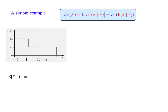Let us now look at the conditional expectation of X given Y. It is a random variable which can take different values depending on what Y is. If Y happens to take a value of 1, then we are in this range, and the conditional PDF of X, given that Y falls in this range, keeps the same shape — it's uniform. And so its mean is going to be equal to the midpoint of this interval, which is 1/2.